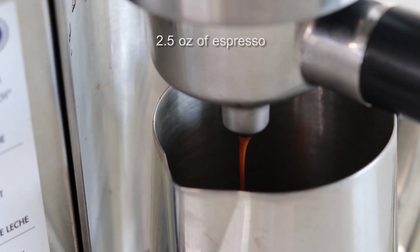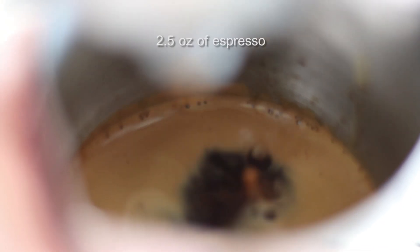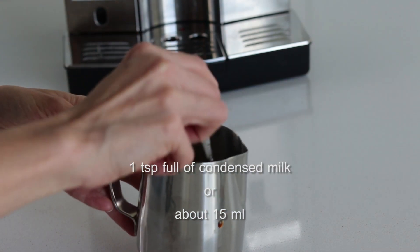You'll get about two and a half ounces of espresso. Then add a full teaspoon of condensed milk and stir it well.